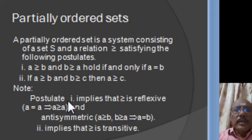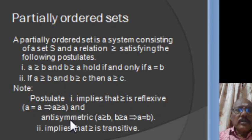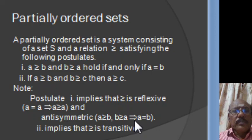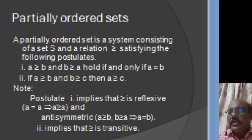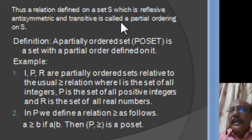The first postulate implies that the relation ≥ is reflexive, because A = A implies A ≥ A. The first postulate also implies that ≥ is anti-symmetric: A ≥ B and B ≥ A implies A = B. And the second postulate implies that ≥ is transitive. Thus, a relation defined on S which is reflexive, anti-symmetric, and transitive is called a partial ordering on S.